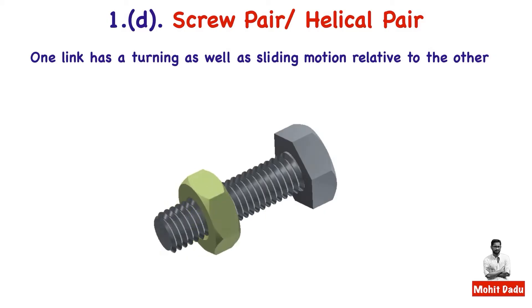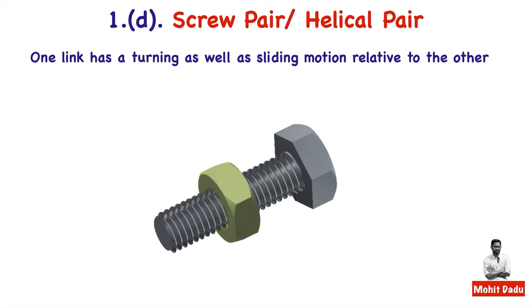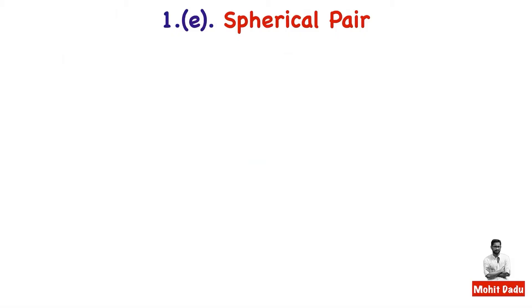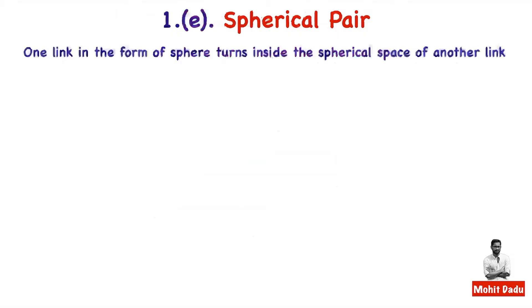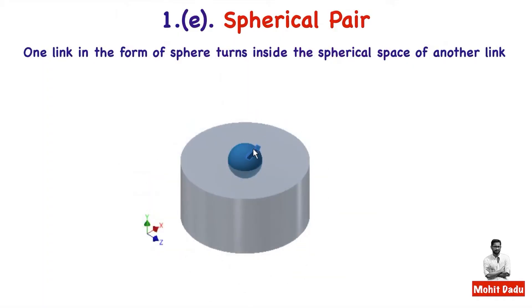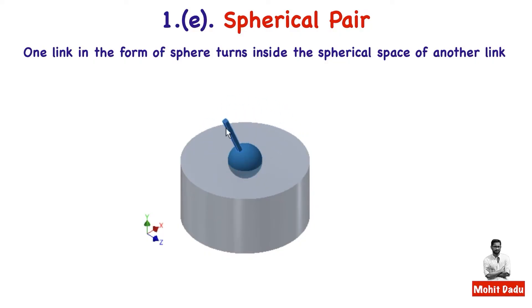In a nut and bolt arrangement, the internal thread of the nut contacts the external thread of the bolt. The motion of tightening is an example of a screw pair, also known as a helical pair, where motion is both turning and sliding. The last type in this category is the spherical pair, formed when a spherical link turns inside the spherical cavity of another link.